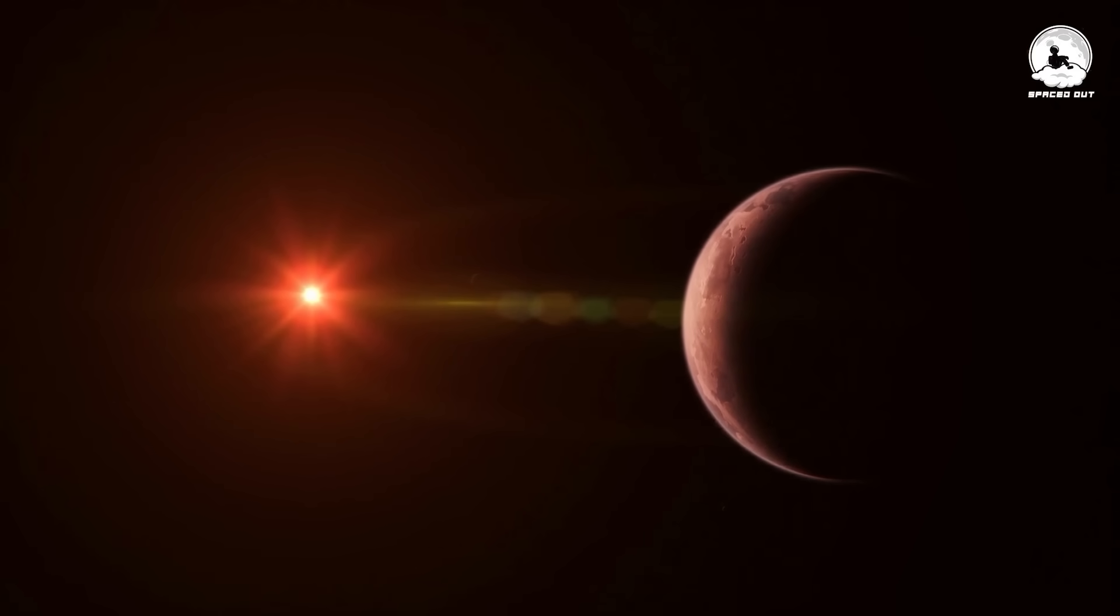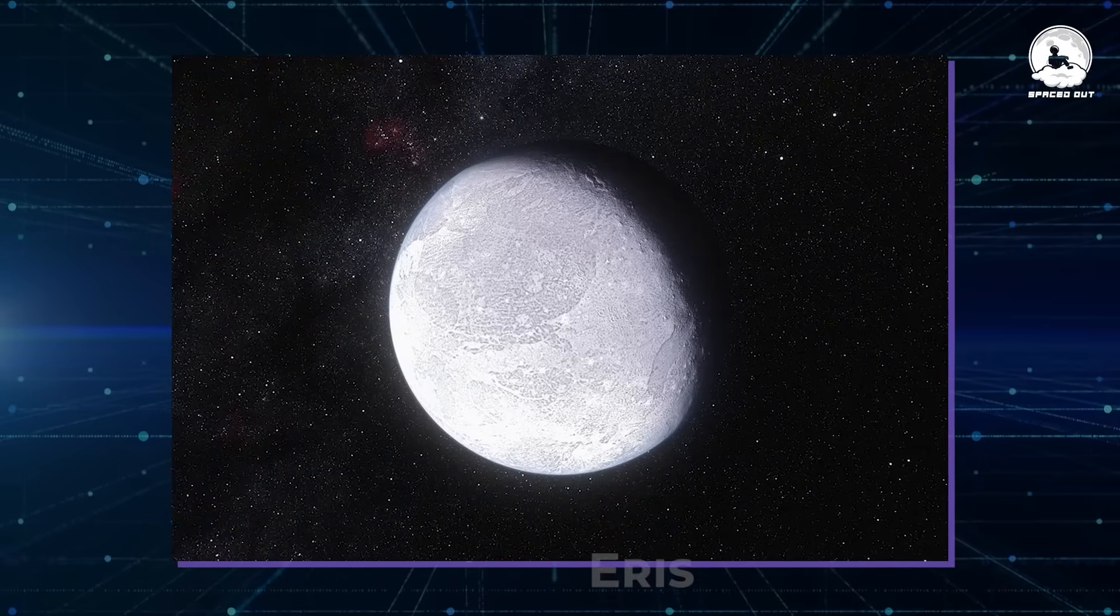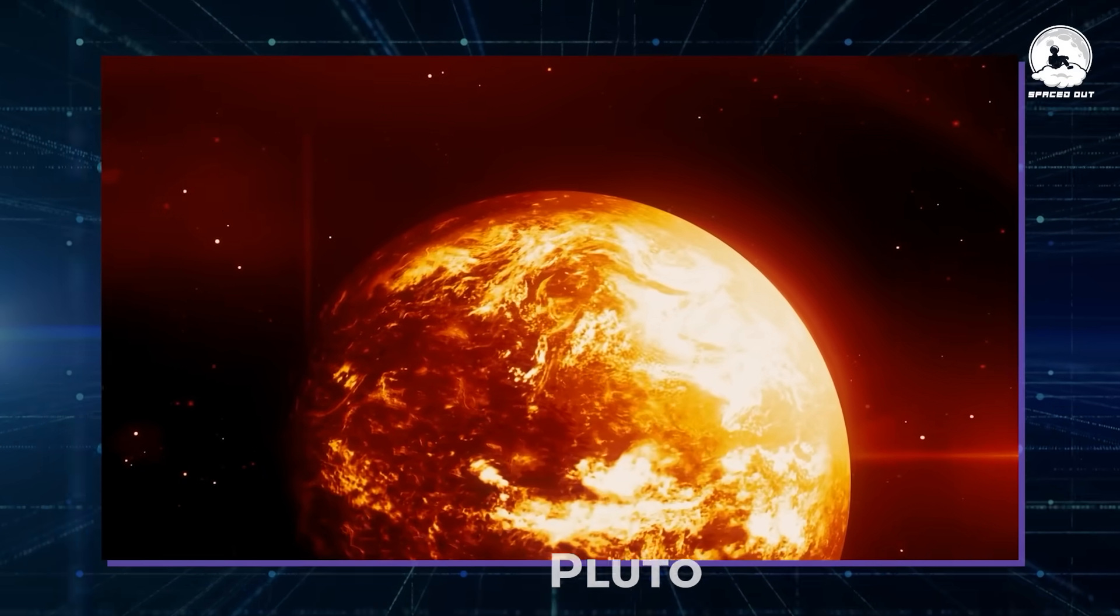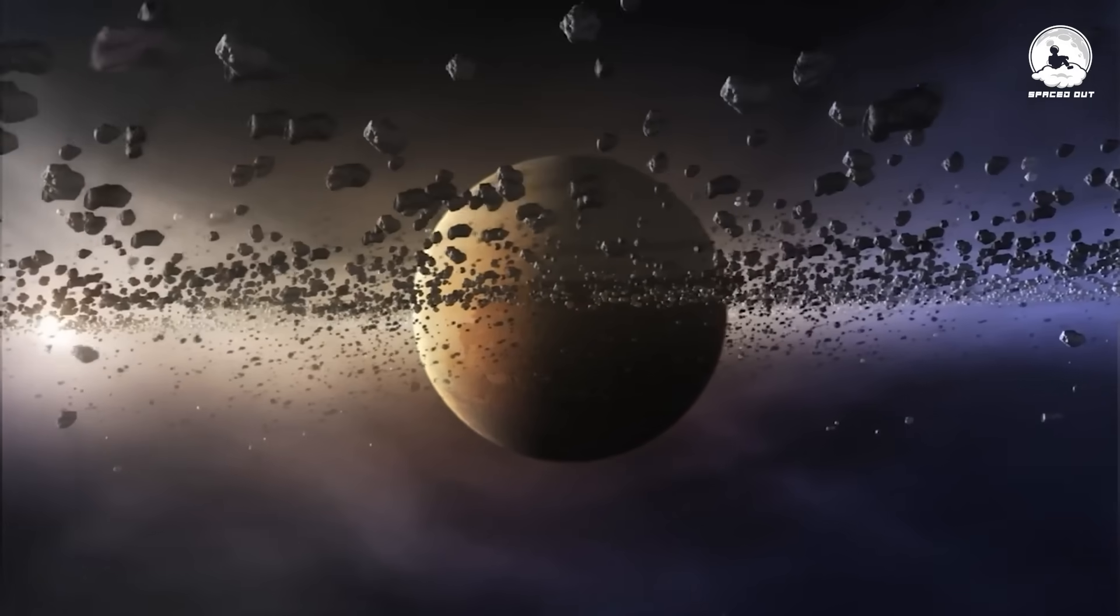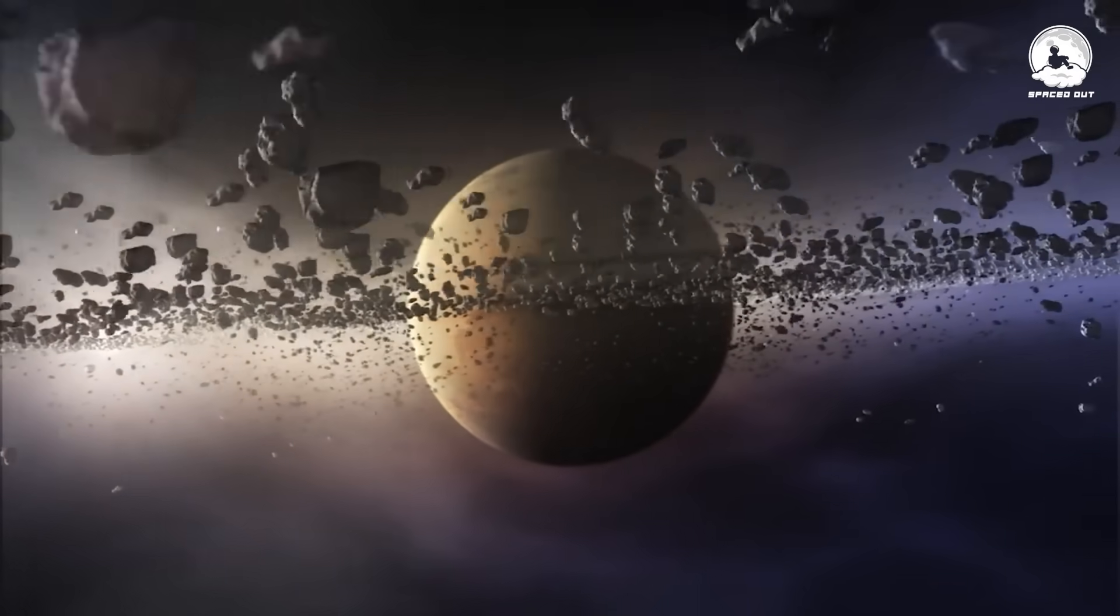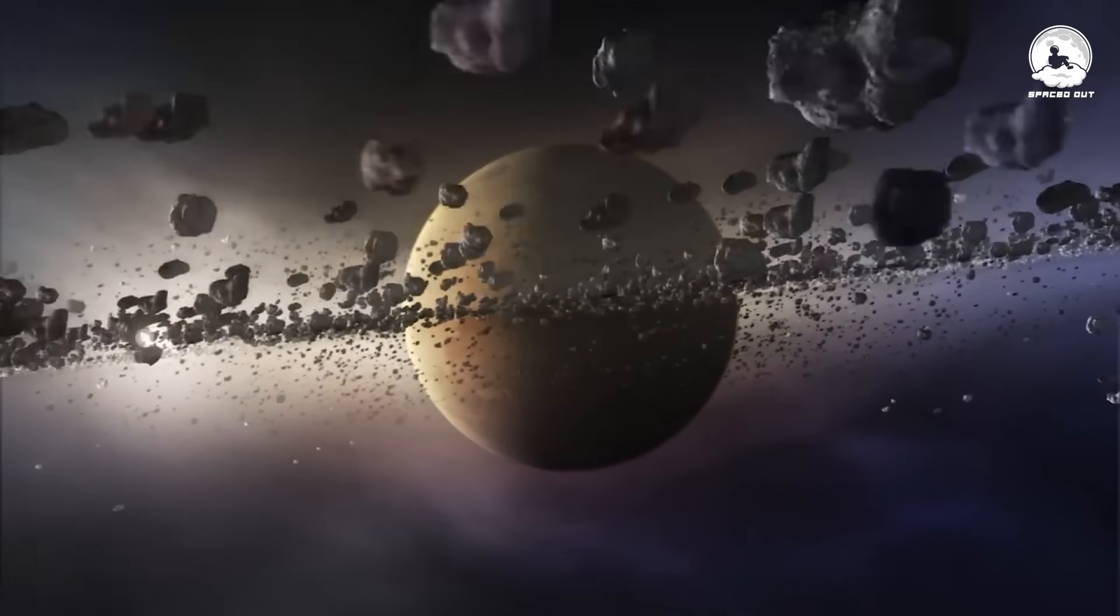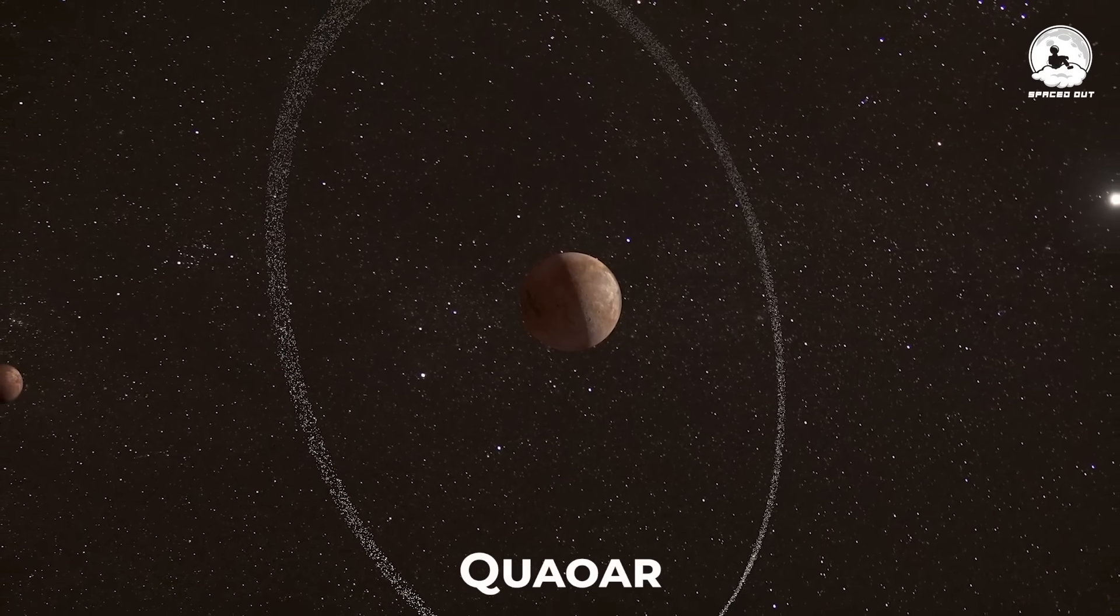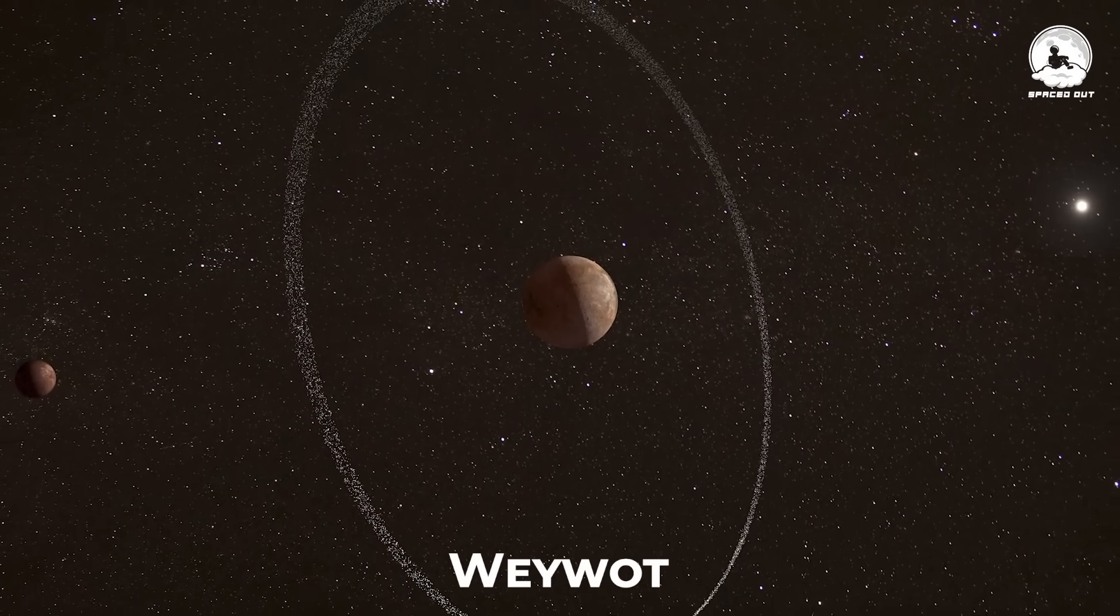There are at least five known dwarf planets – Eris, Haumea, Makemake, Quaoar, and Pluto – in the Kuiper Belt. Many of these dwarf planets have their own moons and even faint ring systems, with scientists recently spotting a ring around Quaoar, which also has its moon Weywot.